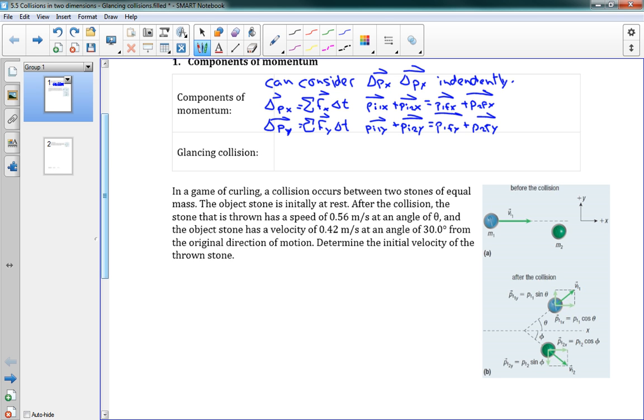And the type of problems we're going to look at are glancing collisions. So this is a collision where the first object after impact travels at an angle from its original direction. So after the collision, it's going to go off in a slightly different direction. Those are the sorts of impacts that we're looking at, glancing collisions.